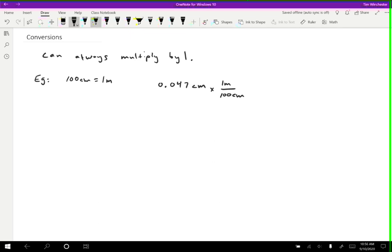Why do I want to do that? Well, the thing that gets me is now I can cross out these centimeters because I have centimeters on the top and centimeters on the bottom. And that leaves me with just meters left over, which is what I wanted. So if I have 0.047 centimeters and I want to convert that into meters, I know I need to divide by 100.